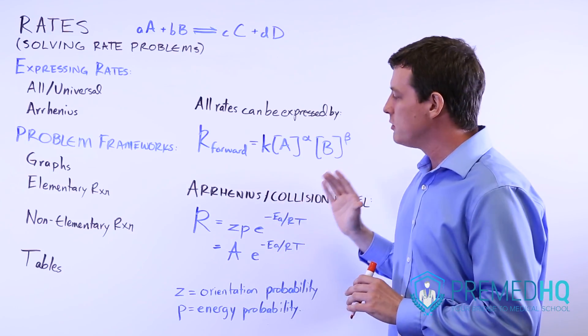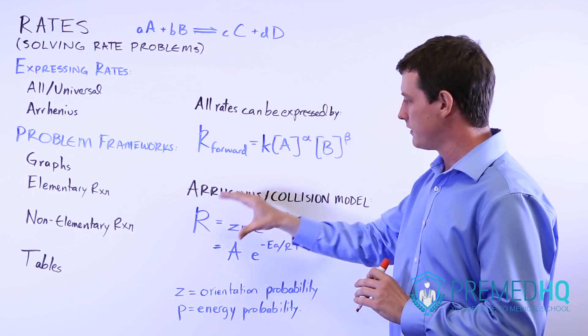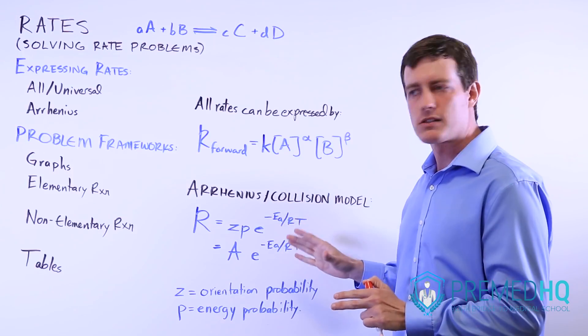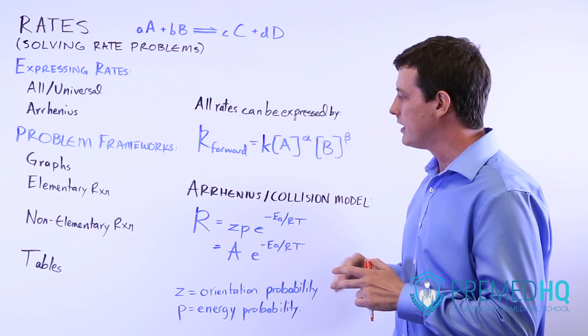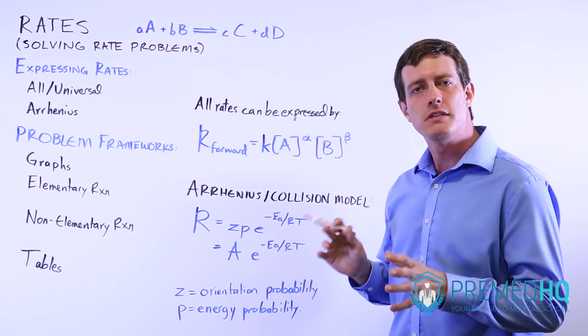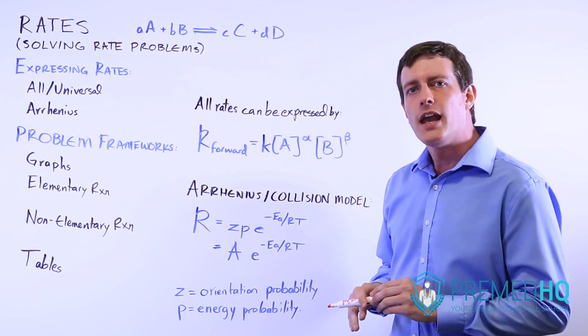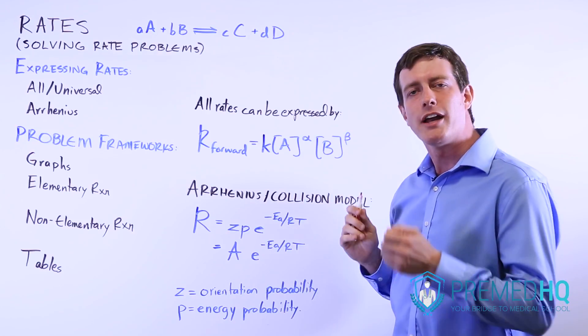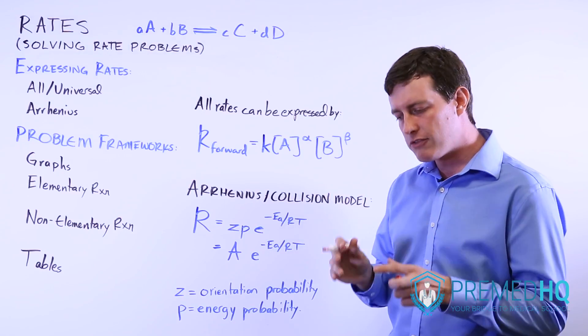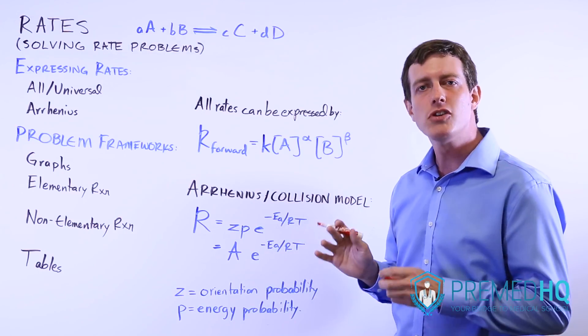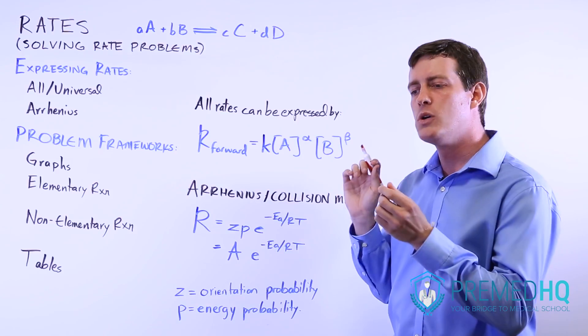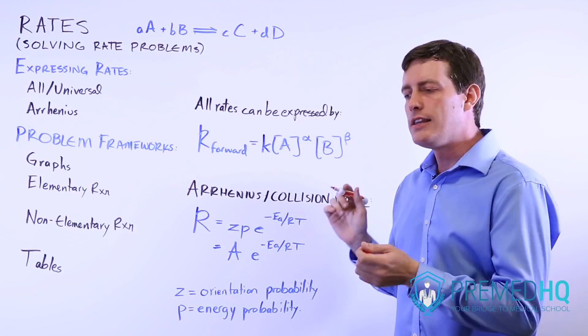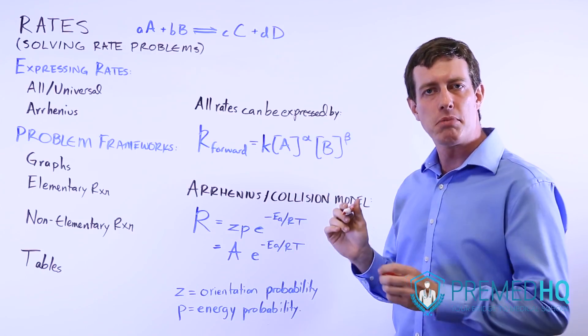The other way you can express rates in a formula is using the model developed by Svante Arrhenius, when he discovered a way of interpreting rates based upon collisions. Arrhenius's understanding was that in order for a reaction to occur, you need several conditions to be met. First, the two molecules or atoms that are interacting have to be oriented in the proper way.